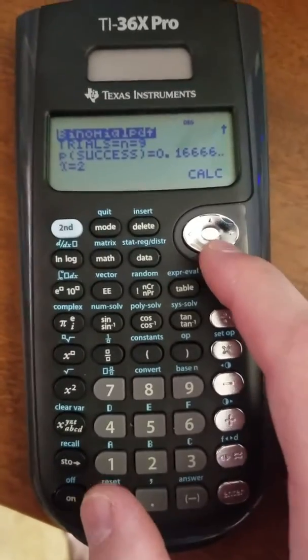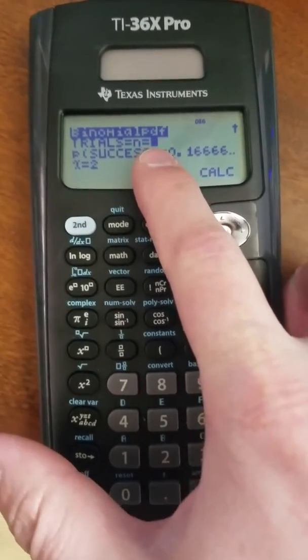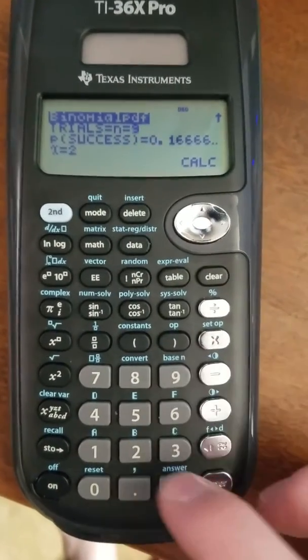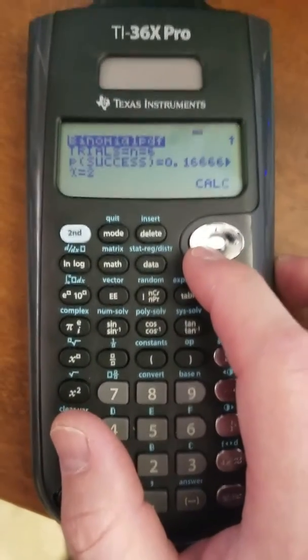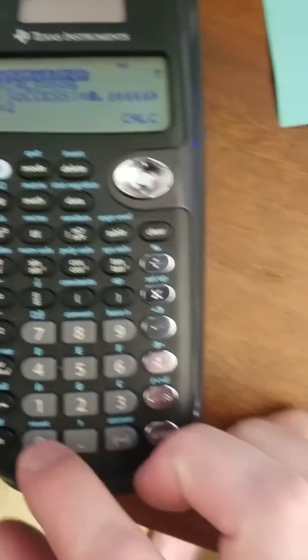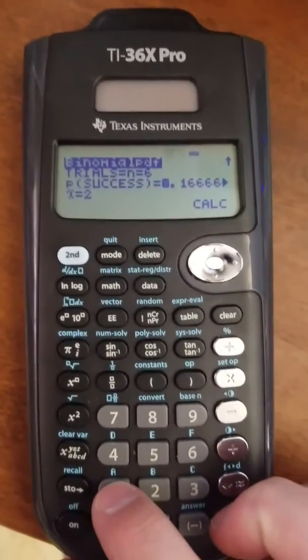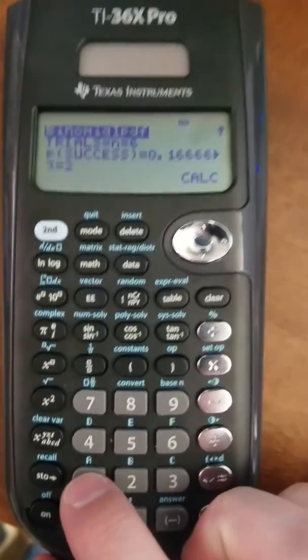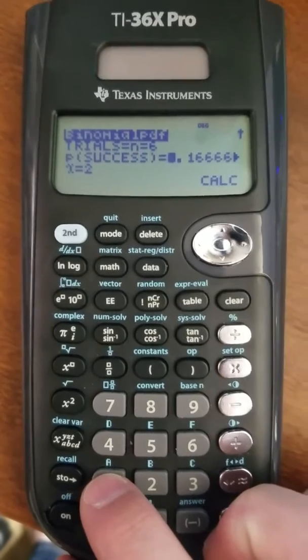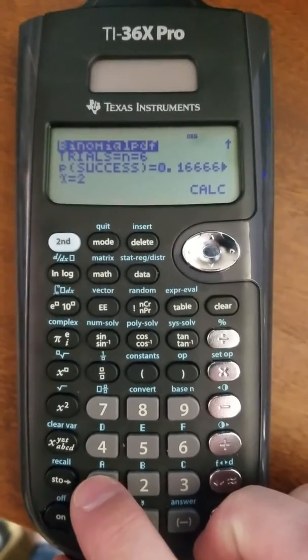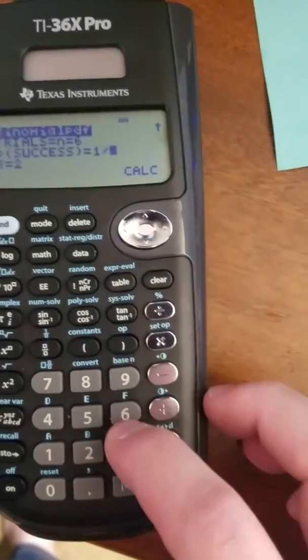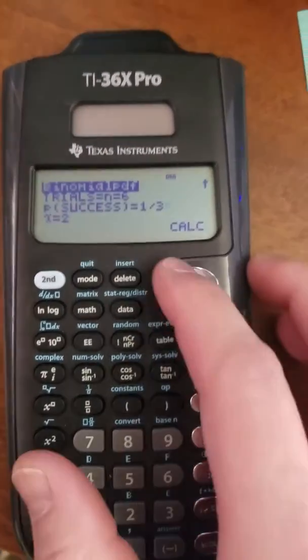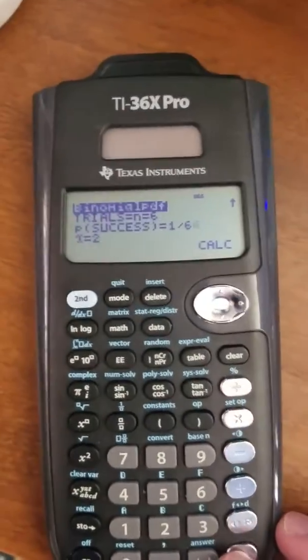So trials, that's the number of trials. If you're rolling a die six times, your trial would be six. Your number of trials would be six. If it's a six-sided die, then this number would be one out of six. It depends on what your idea of a success is. If your idea of a success is getting a single number, let's say a three, then this would be one-sixth. Hit enter.